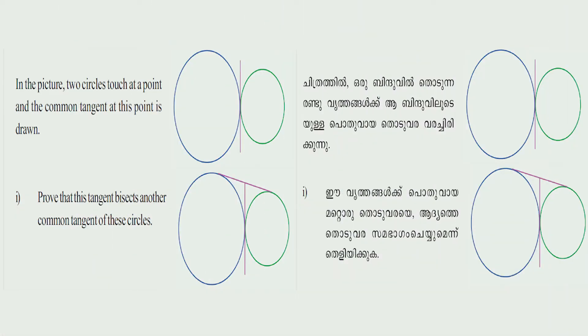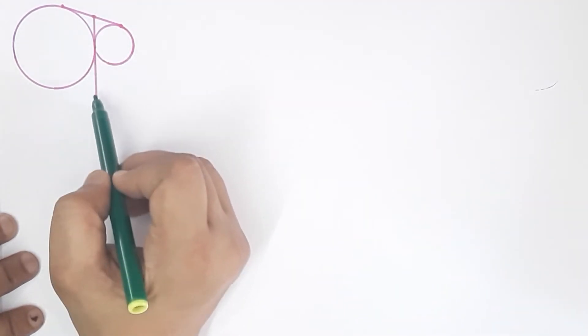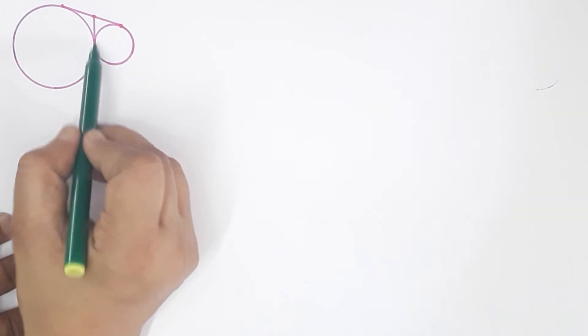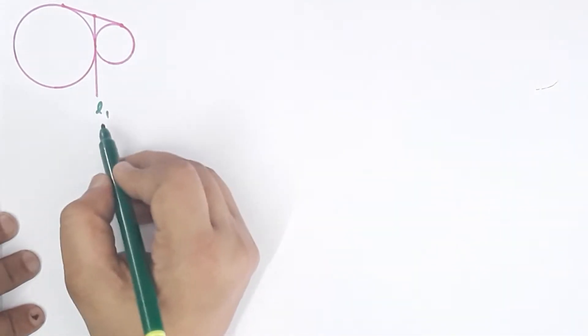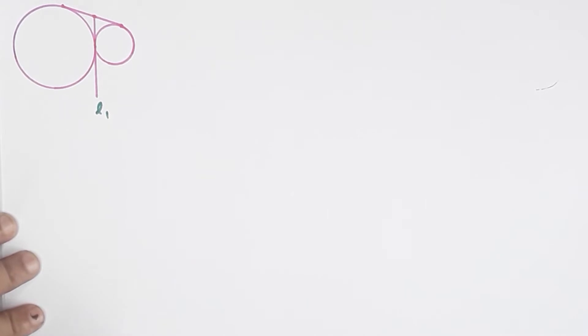Next problem: in the picture, two circles touch at a point and a common tangent at this point is drawn. We have tangents L1 and L2. We need to prove that this tangent bisects another common tangent of these circles.